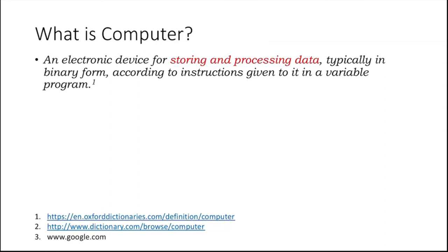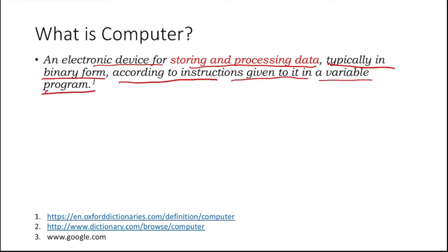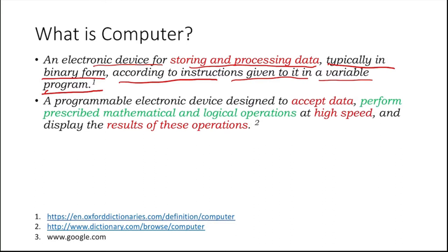There are many definitions of a computer available. The first one is taken from the Oxford Dictionary: 'An electronic device for storing and processing data, typically in binary form, according to instructions given to it in a variable program.' There are also other definitions.